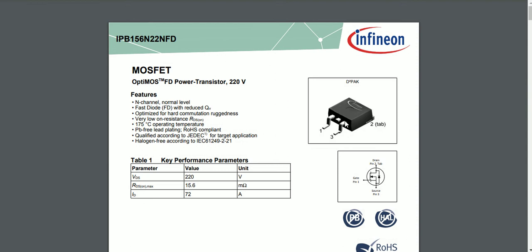The drain is the tab — if you analyze this package, there will be a lead frame, and the drain is connected to it. The major source of heat dissipation happens from the drain. This is the common configuration where, for any MOSFET, the drain will be the bigger pad on the footprint, with smaller pins for gate and source.